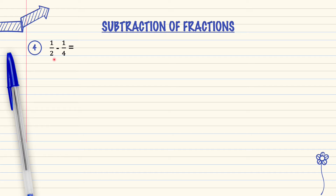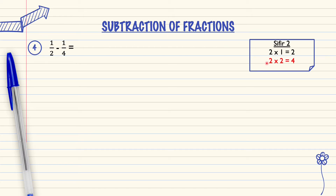Let's look at the 2 times table. In the 2 times table, there is number 4 in the answer. So this means number 2 will be multiplied by 2 to become 4. If the denominator is multiplied by 2, the numerator must also be multiplied by 2.